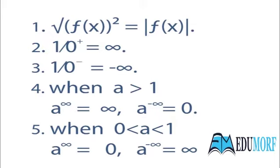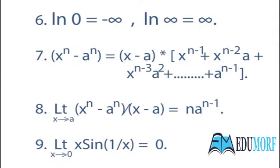Third, 1 upon 0− is equal to minus infinity — here it's slightly less than zero, a very very small negative number. Fourth, when any number a is greater than one, a raised to the power infinity equals infinity, and a raised to the power minus infinity equals zero. Fifth, when a lies between zero and one, a raised to the power infinity equals zero, and a raised to the power minus infinity equals infinity. Sixth, ln 0 equals minus infinity and ln infinity equals infinity.